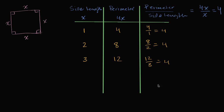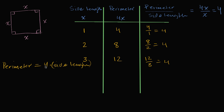This definitely meets our conditions for being a proportional relationship. The ratio between perimeter and side length is always going to be four. We could write it like this: the perimeter for a square is equal to four times the side length. The perimeter is equal to a constant times the side length, or perimeter divided by side length equals four. So this is definitely a proportional relationship between side length and perimeter.